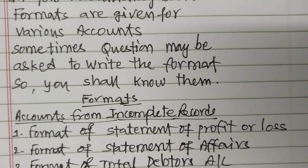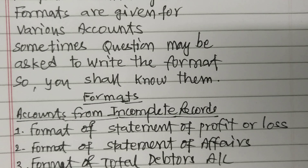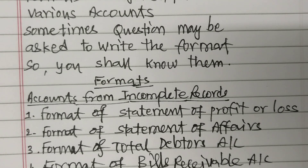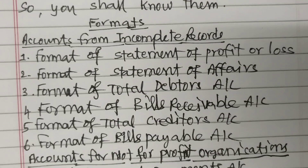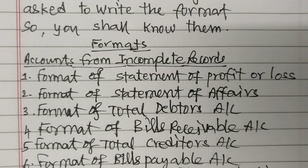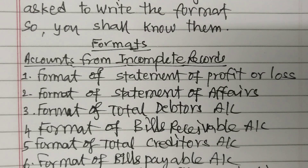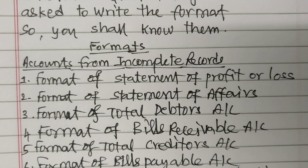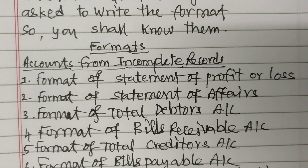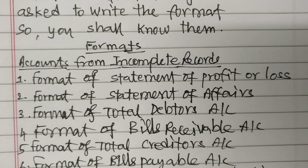Accounts from Incomplete Records — in this chapter, there are 6 formats. The first is the Format of Statement of Profit or Loss.